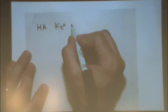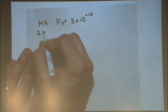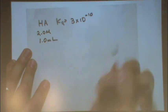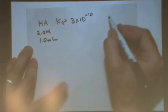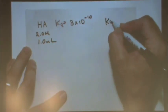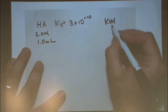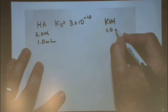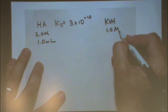I have, let's say we have an acid, HA, and I have a Ka for this acid of 3 times 10 to the minus 10, for example, and let's say I have 2 molar and 1 milliliter of it. And then I add KOH, and let's say that this is 1.0 molar, something like that.